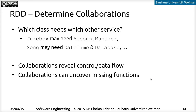Last but not least we need to look at how the individual classes collaborate with each other — which class needs another's services. To figure out how many times a song was played on one day, we might need something like a DateTime object and maybe a small back-end database. For the Jukebox we'll probably need some kind of AccountManager that validates the student ID. If we draw these collaborations on paper, we can already see the basic data flow through the system and figure out what's still missing — something like a DateTime object, which we never explicitly discussed but still need when dealing with time spans.